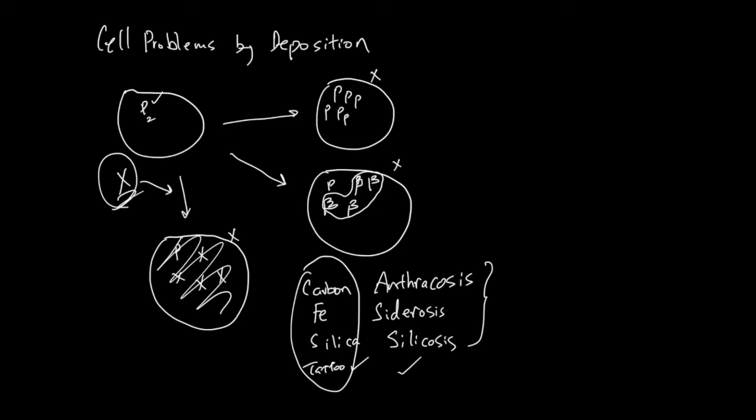Now I want to give you a few examples of cells' own process going bad leading to these deposition problems. The first one is breaking down of blood. So hemoglobin in the breakdown process will turn into bilirubin and metal-containing structure. And this metal-containing structure can deposit, causing siderosis. And the bilirubin can also deposit and cause jaundice and bland eyes.